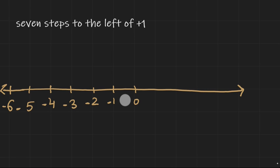Similarly, we will mark the numbers to the right of number line: +1, +2, +3, +4.